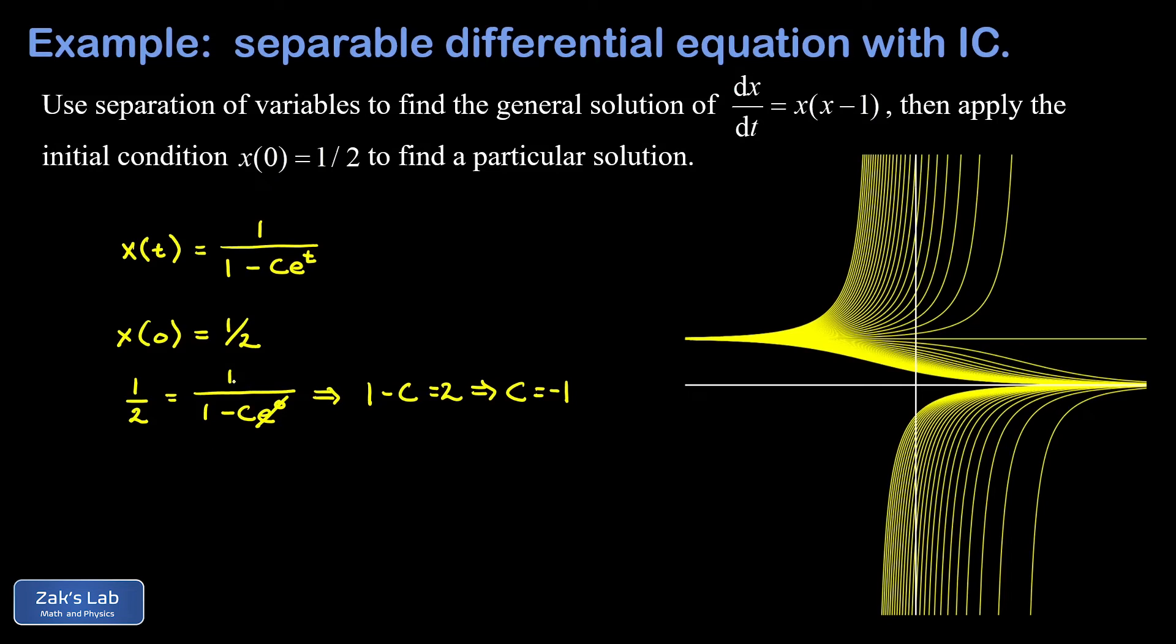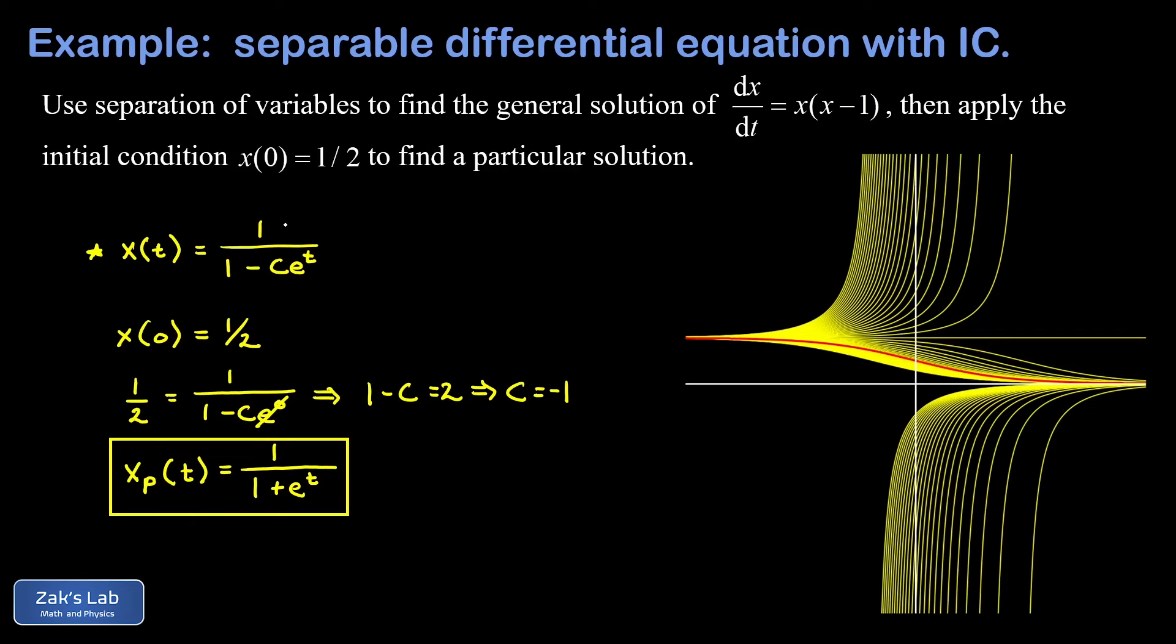So now we take that value of c and plug it back into the general solution. And I'm going to go ahead and subscript this as a particular solution. So I'm going to write it as x_p(t). And that's 1/(1 + e^t). So I want to finish by just pointing out what's happening graphically when we apply the initial condition. We started with a family of curves given by this form 1/(1 - c·e^t). We specified an initial condition, insisting that the curve we're interested in must pass through the point (0, 1/2). So we're selecting a single curve from this infinite family that happens to pass through that point (0, 1/2). And now we have the special curve that both solves this original differential equation, dx/dt equals x(x-1), and passes through the point (0, 1/2).